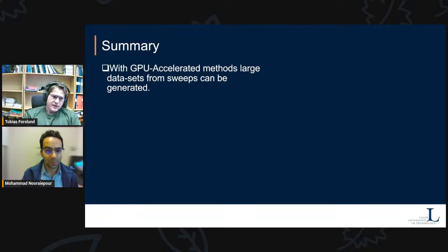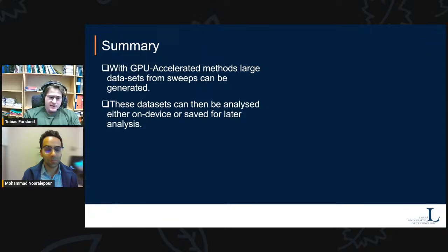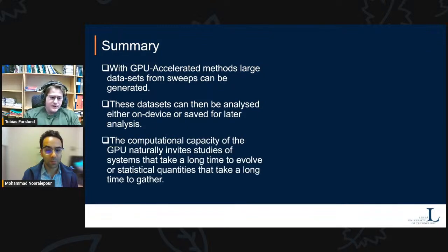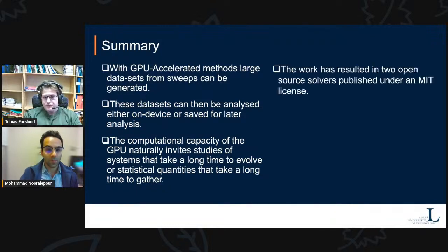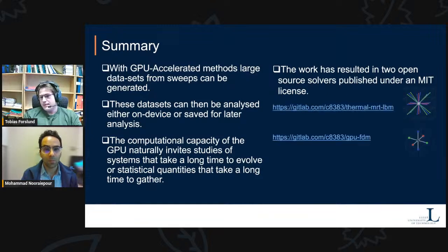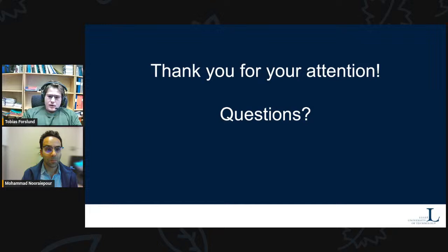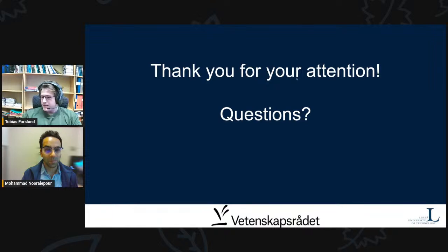In summary: with GPU-accelerated methods, large datasets from parameter sweeps can be generated, and these datasets can be analyzed either on-device or saved for later. The computational capacity of the GPU naturally invites studies of systems that take a long time to evolve or where statistical quantities take a long time to gather. This work has resulted in two open-source solvers published under an MIT license, available at the links shown — also referenced in my papers. They are free to use. Thank you for your attention — I'll gladly take questions. This research was funded by Vetenskapsrådet.